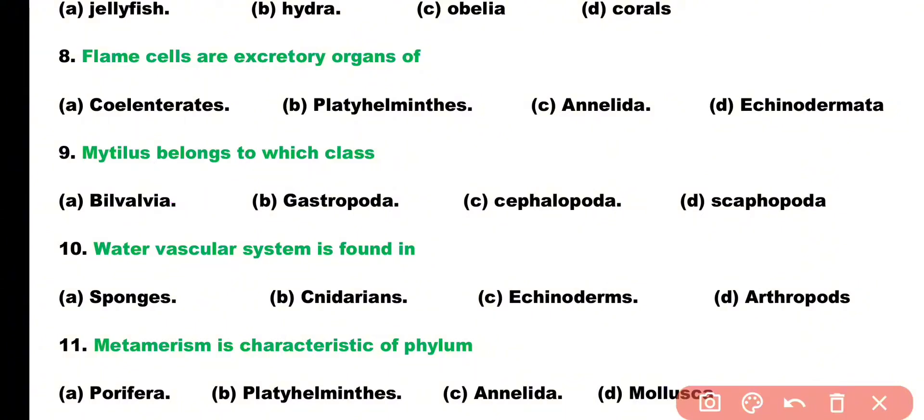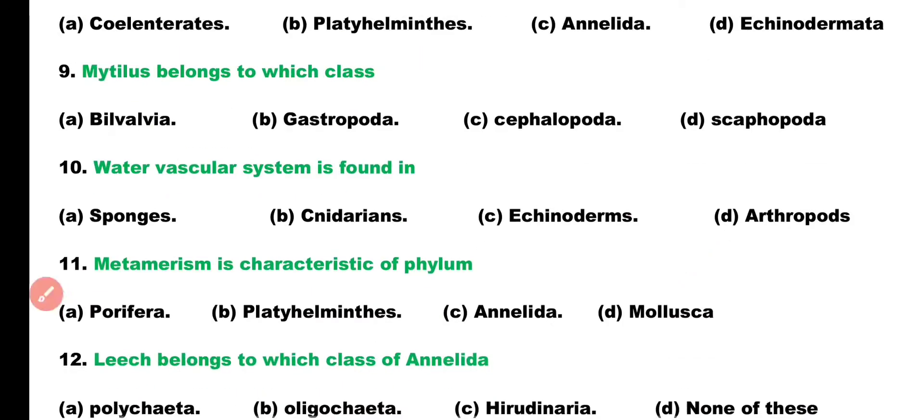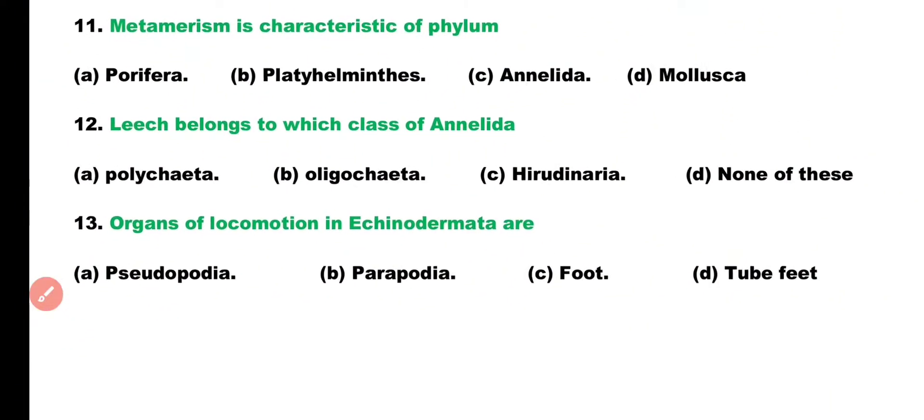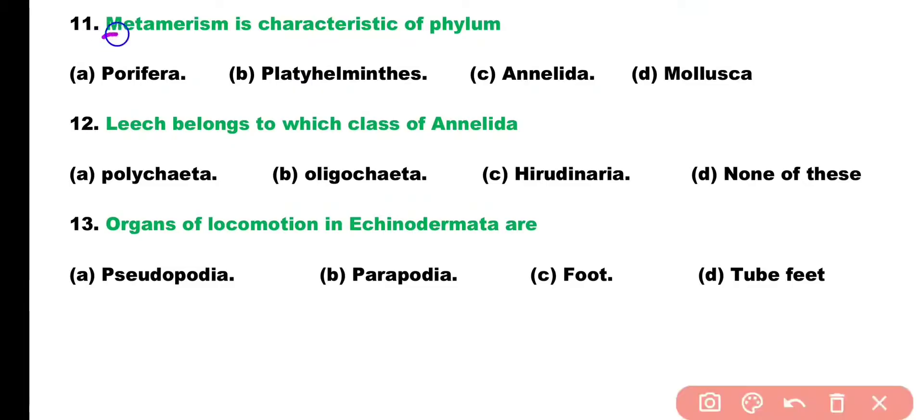Question 10. Water vascular system is found in: Sponges, Cnidarians, Echinoderms, or Arthropods? Correct answer is Option C. Water vascular system is a characteristic of Phylum Echinoderms.